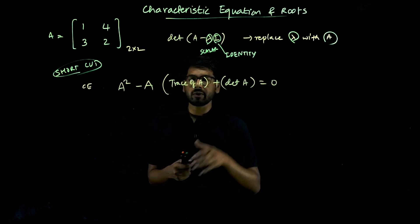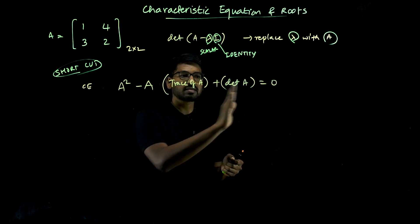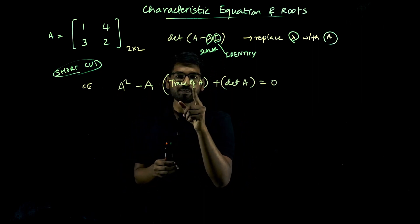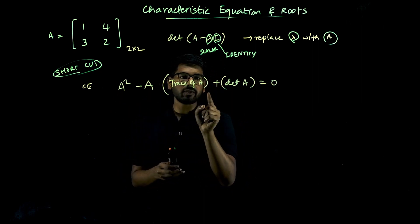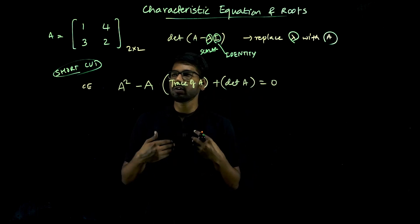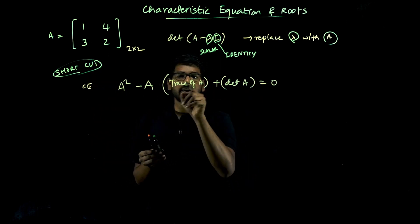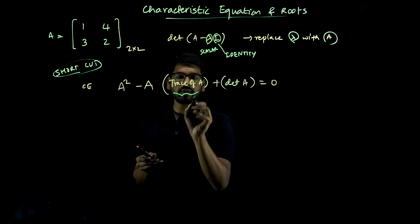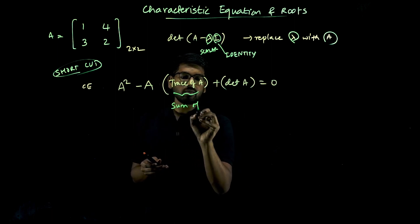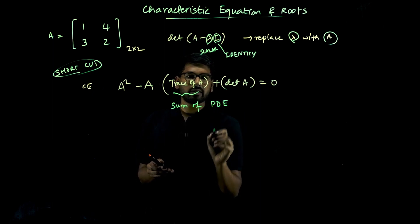It is a quadratic equation: lambda squared minus lambda plus constant equals zero. The coefficient of lambda is trace of A, and the constant is determinant of A. We know how to find determinant of A. What is trace of A? Trace of A is the sum of principal diagonal elements.